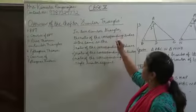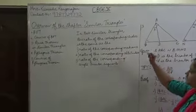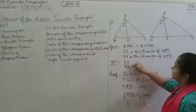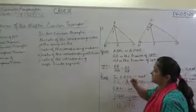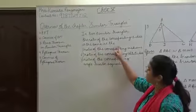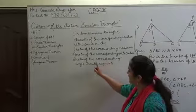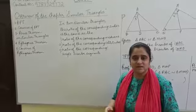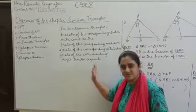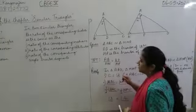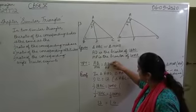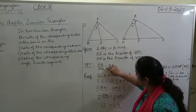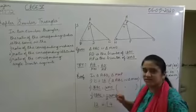In two similar triangles — and we have two similar triangles here — the ratio of the corresponding sides, like AB and MN, is the same as the ratio of the corresponding angle bisector segments. A segment is a part of a line, so we're talking about the ratio of the corresponding angle bisector segments.